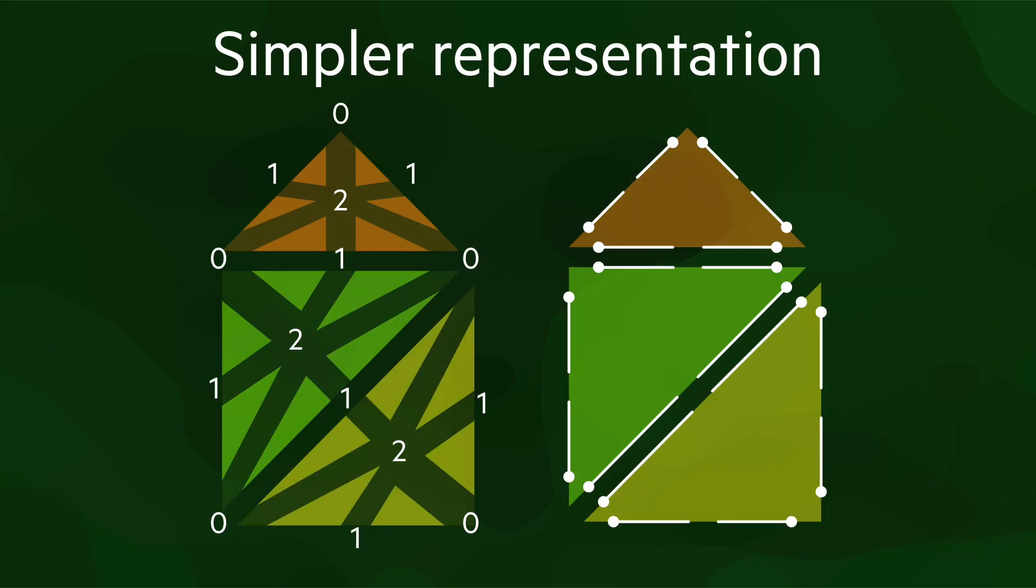So when you see generalized or combinatorial maps represented graphically, the usual approach is to represent them in a simpler way by omitting most of the vertices of each dart, like the example shown here on the right.